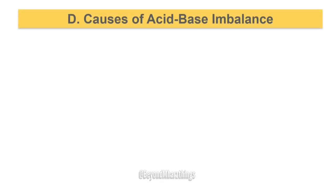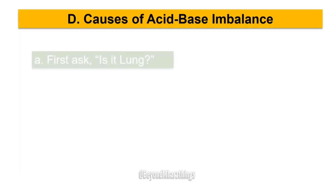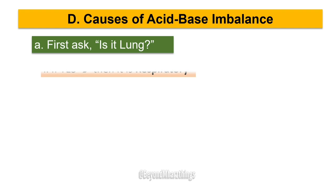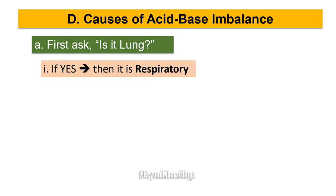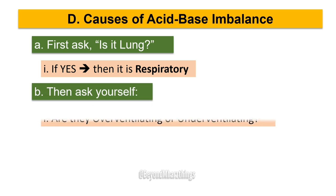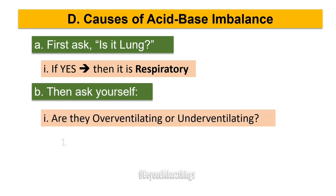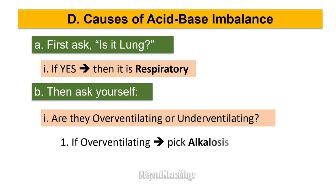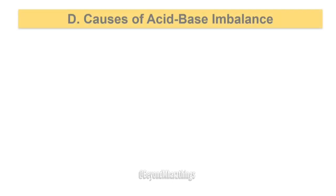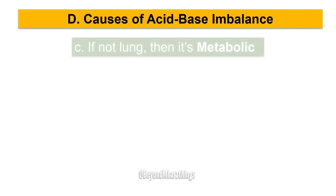Causes of acid-base imbalance. A: First ask — is it the lung? If yes, then it is respiratory. B: Then ask yourself, are they overventilating or underventilating? If overventilating, pick alkalosis. If underventilating, pick acidosis. C: If it is not the lung, then it is metabolic.